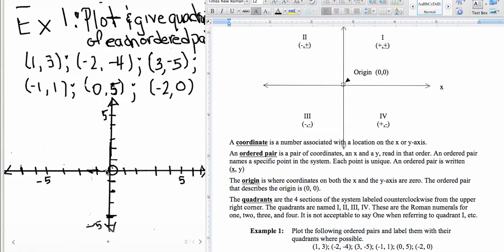Now the origin is just the point where x is 0 and y is 0, and it's represented by the ordered pair (0, 0), as we see over here in the notes.